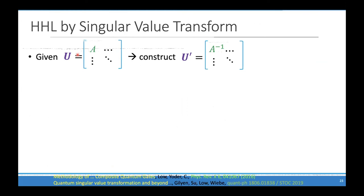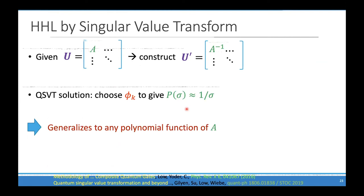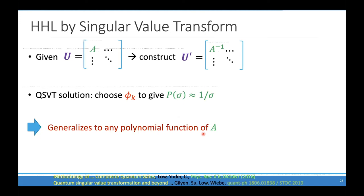Not only can you compute the inverse (as HHL does), you can do any polynomial function of A, so you can be much more creative and go way beyond the HHL algorithm. The singular value transform really does cover factoring, simulation, and search. Beyond this, there's much known about what it can do: many more matrix functions useful for machine learning, and essentially every quantum walk algorithm can be turned into a singular value transform algorithm. The direction I'm going personally is to show how singular value transforms can be used to solve quantum channel discrimination problems, going beyond algorithms to sensing.